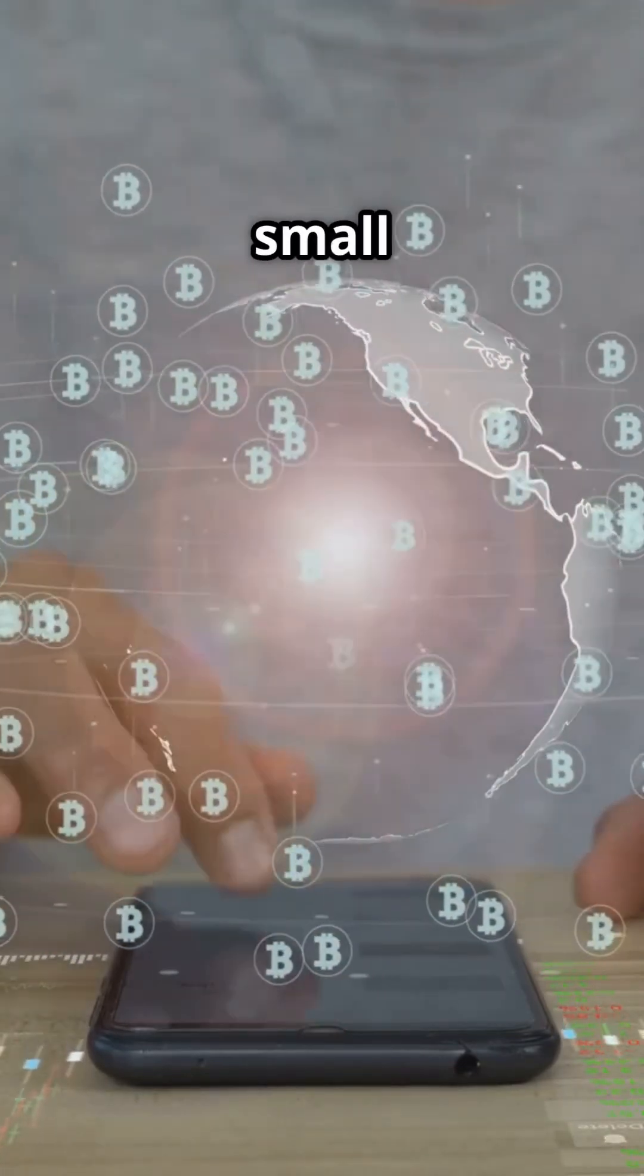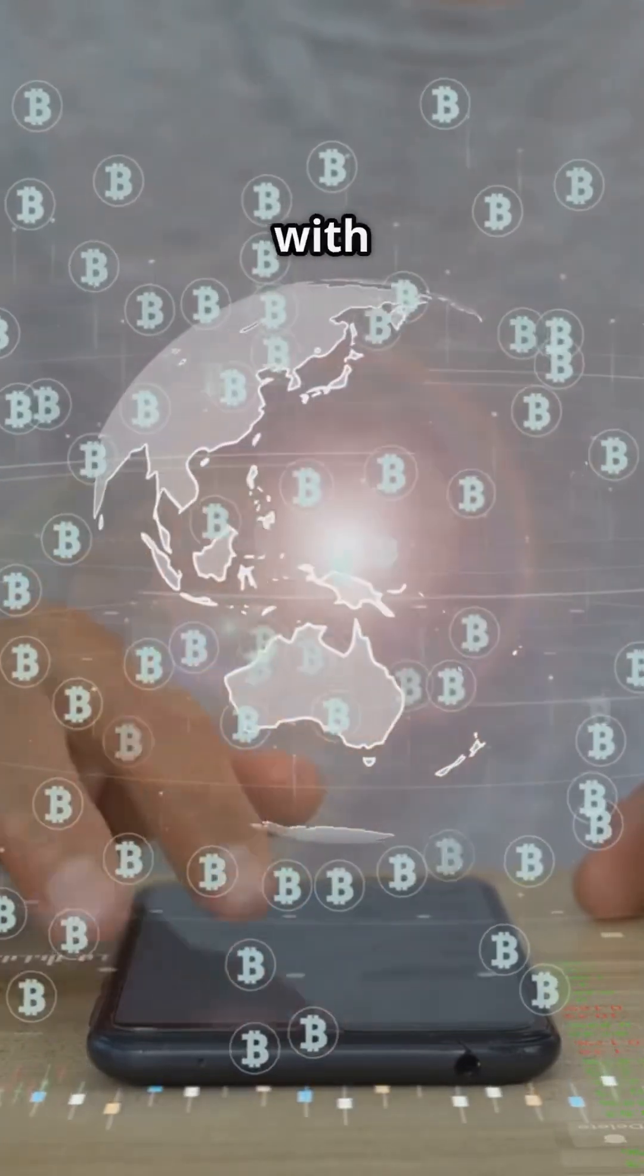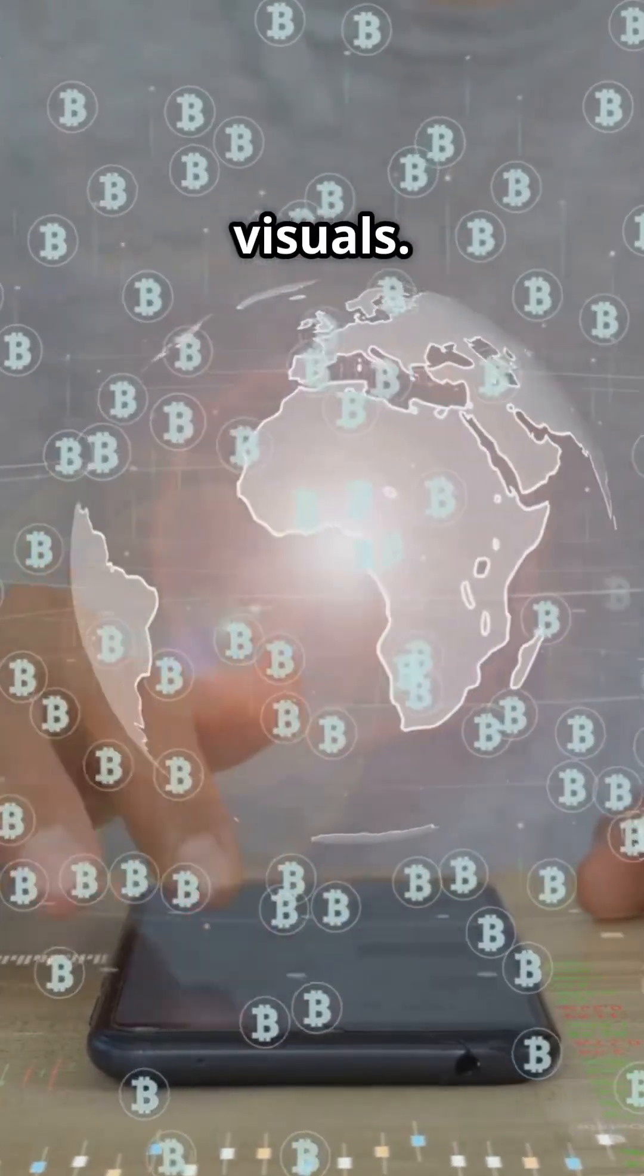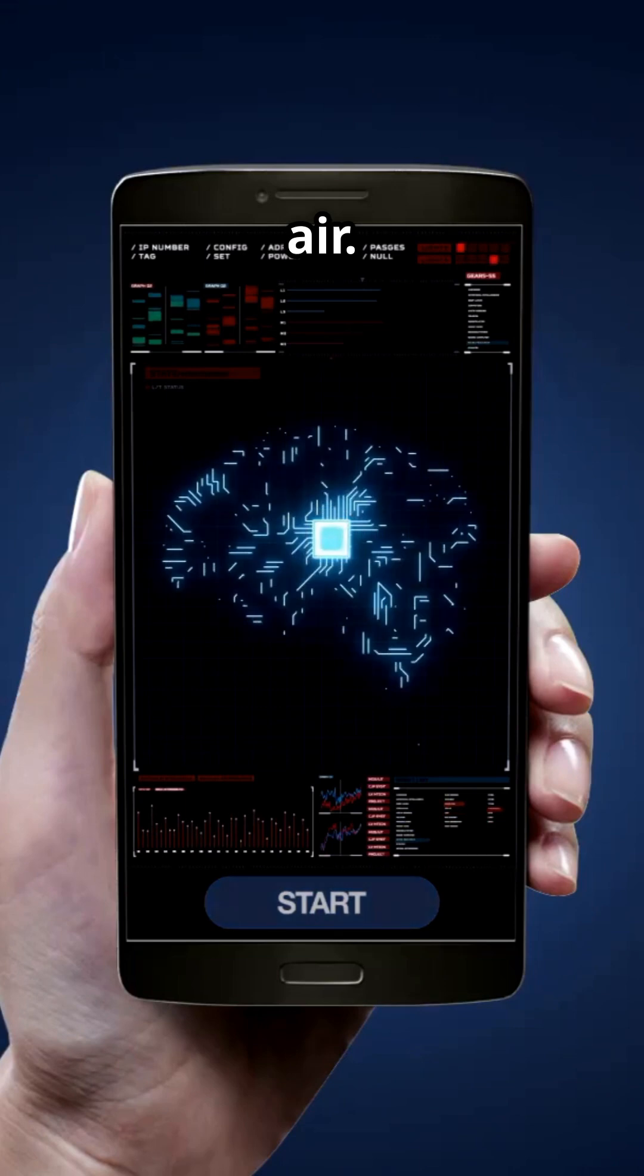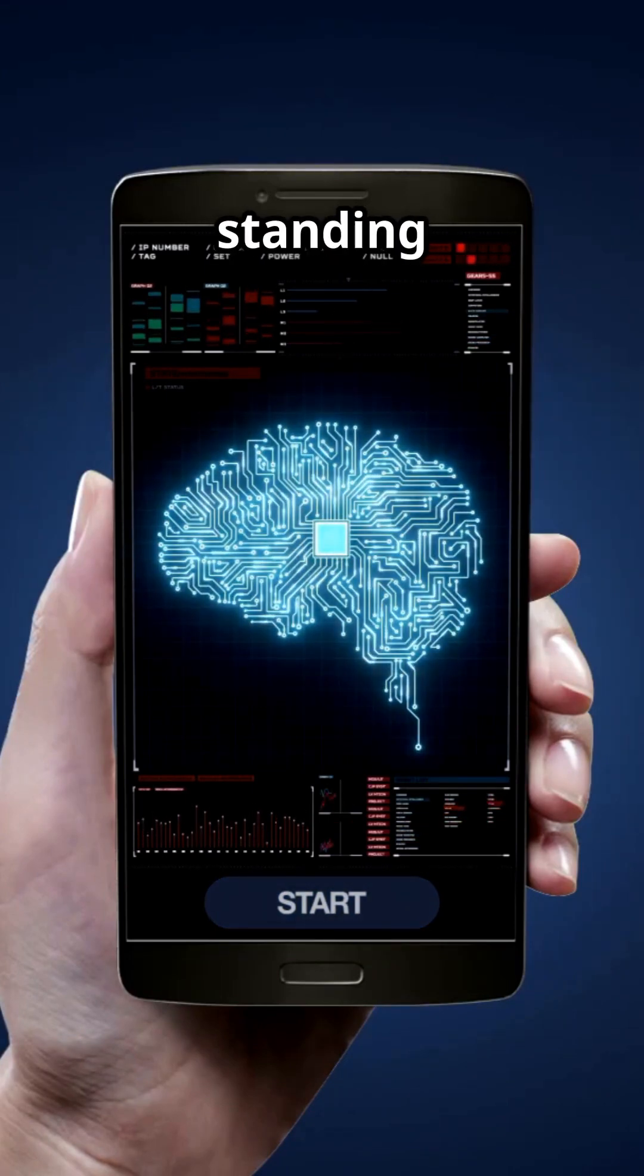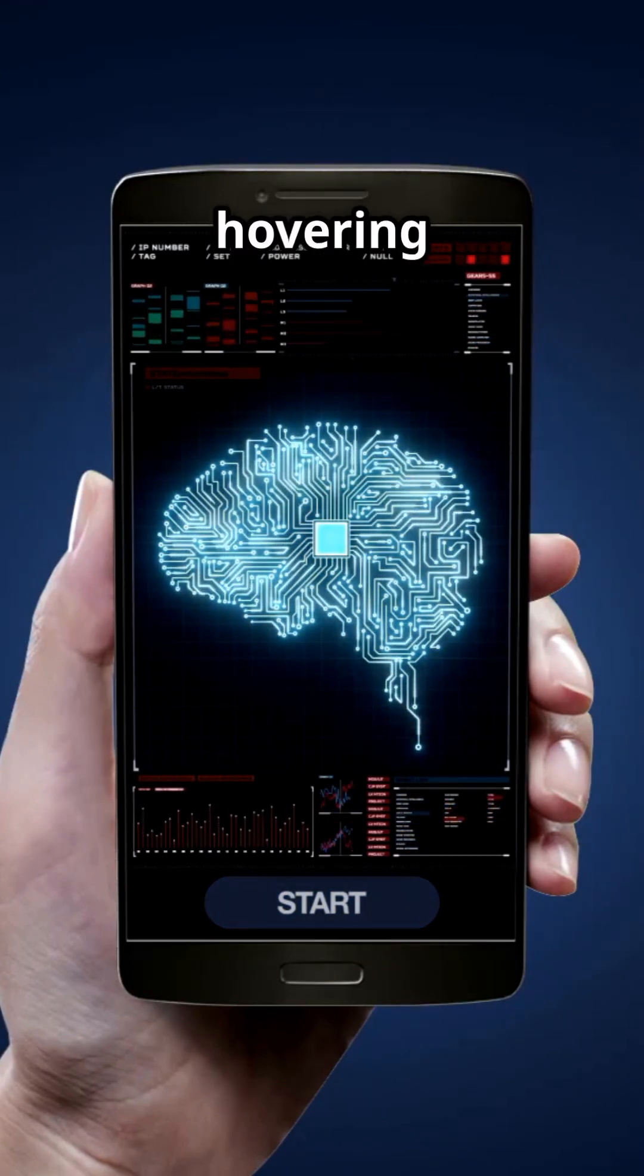No more squinting at small text or struggling to share your screen with friends, just pure, immersive visuals. In the future, your phone projects a full 3D image right into the air. You could have a virtual assistant standing next to you, or a 3D map hovering above your desk.